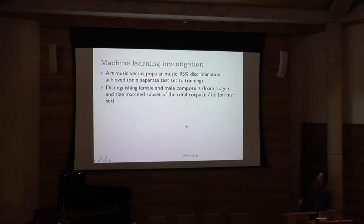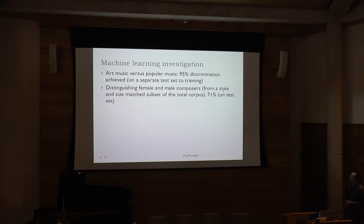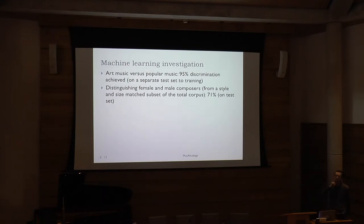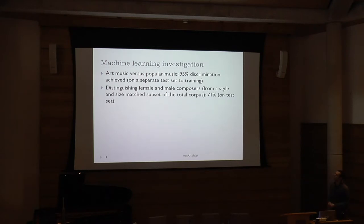We've also tried out machine learning investigation over this corpus, because in the metadata we've got each piece annotated as art music or popular music, and whether it's from female or male composers. For art music versus popular music, we can get 95% discrimination — this is with a controlled methodology on a test set rather than a training set. If you're distinguishing female and male composers it's a bit harder. You take a style and size matched subset of the corpus — we admit it's not gender balanced overall — but if you take a gender balanced subset you can get 71% discrimination. Whether that would extend to a much larger corpus, I make no great claims. I'm just telling you that we did it in this particular instance.